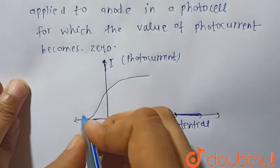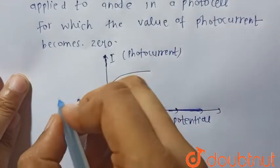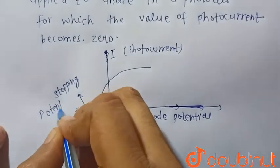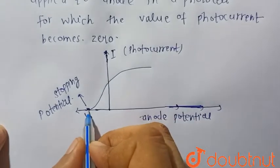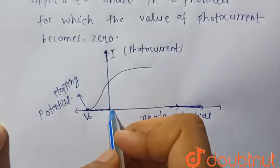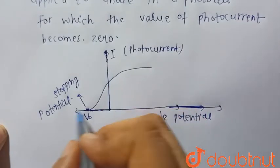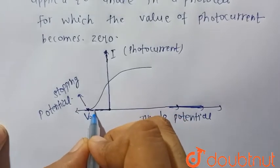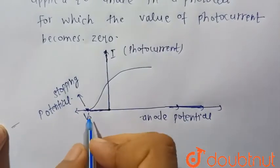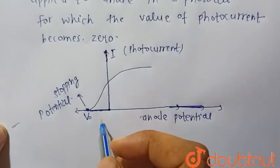So this is V0, which is the stopping potential. We can see that at this stopping potential, the value of photo current is zero because photo current is represented on the y-axis. From zero onward it is increasing, but at the stopping potential we can clearly see the photo current is zero. Hence, stopping potential is that minimum negative potential which, when applied to the anode, makes the photo current become zero.